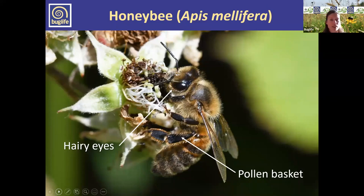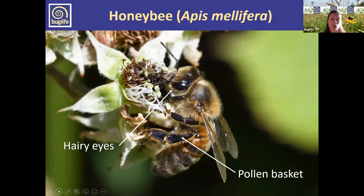This picture is a good example of what a pollen basket looks like — it's on the hind legs of females, where they collect pollen to take back to the nest to feed the young. Honeybees also have this pollen basket on the hind legs, which is a really good thing to look out for when identifying our bumblebees.